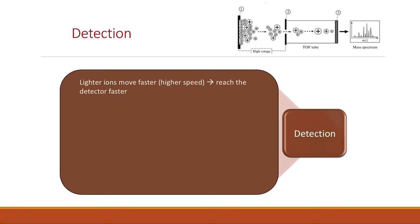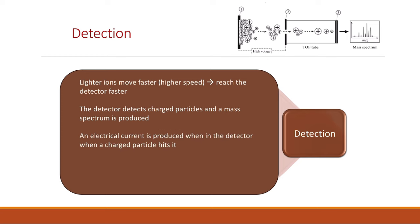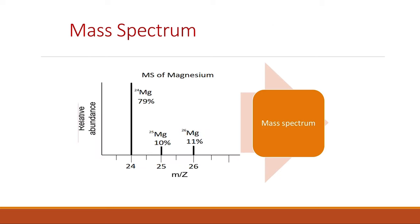Finally, there is the detection stage. The lighter ions move at higher speed and reach the detector faster. The detector detects the charged particles when they hit it, producing an electric current, and a mass spectrum is produced.